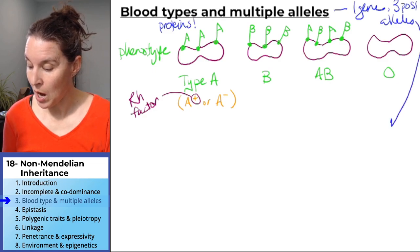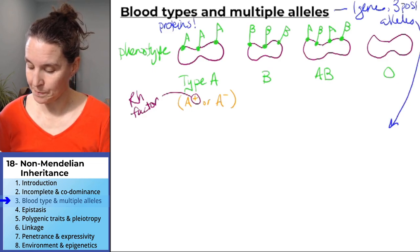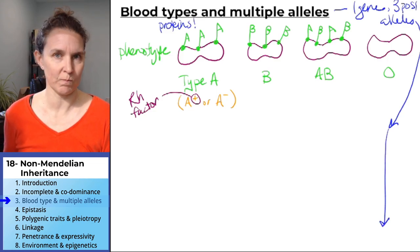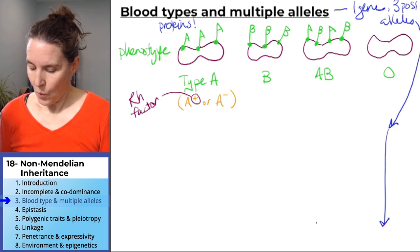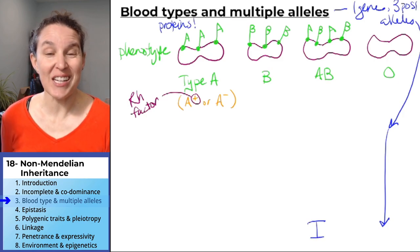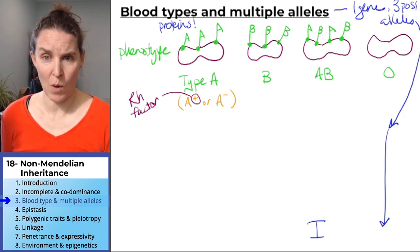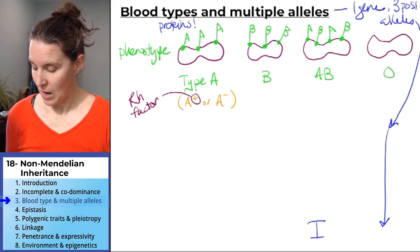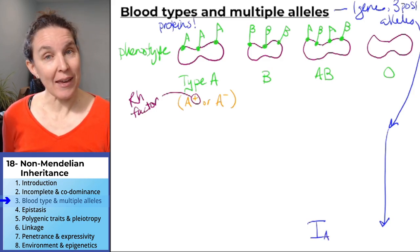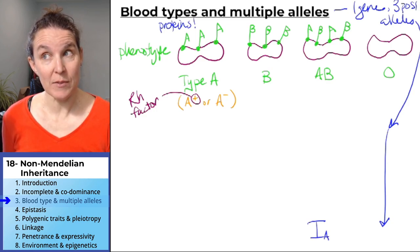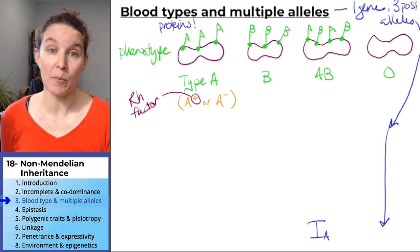And I'm going to throw those possible alleles down here. I'm going to throw the possible alleles way down here. The gene, I have no idea why, is called the I gene. Cool. And the IA allele codes for A antigens to be embedded in the cell membrane.